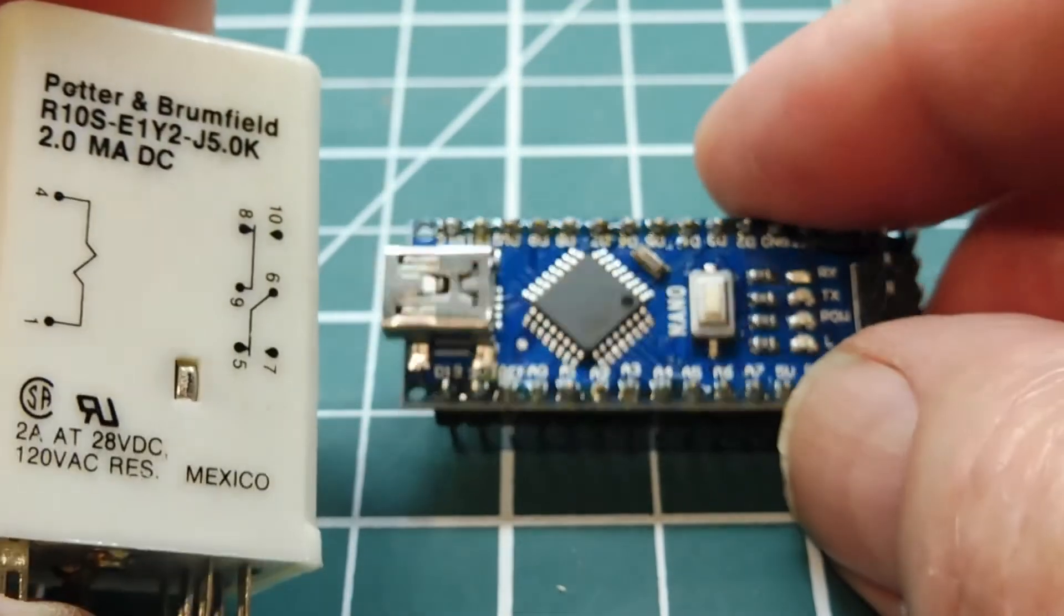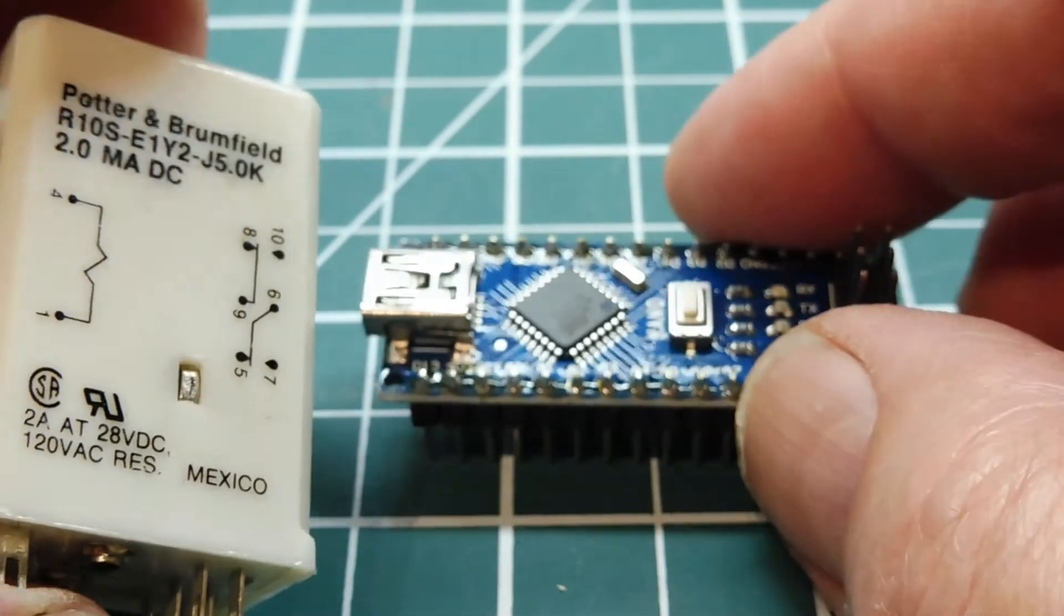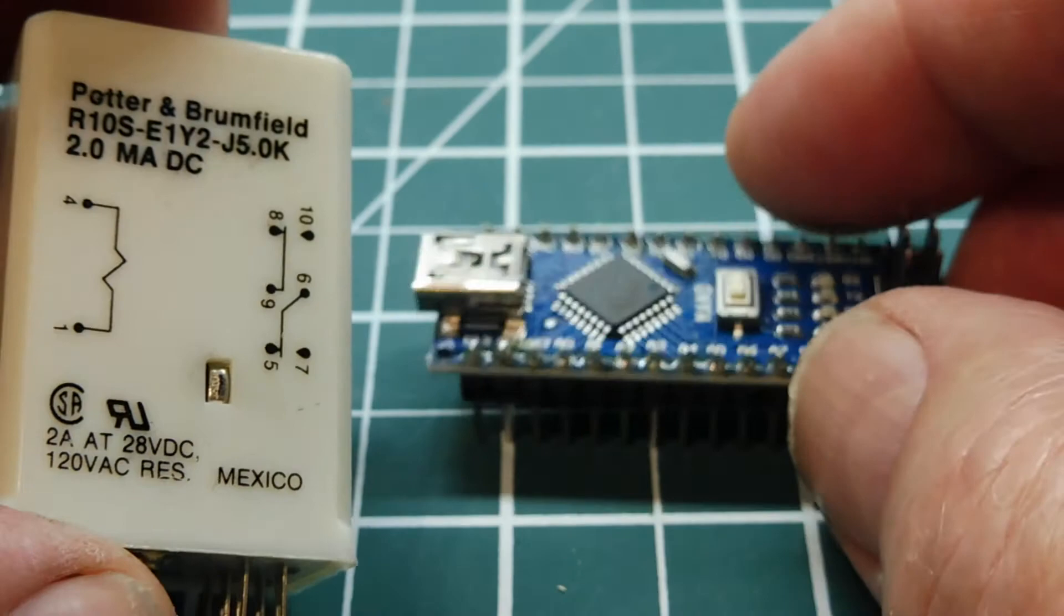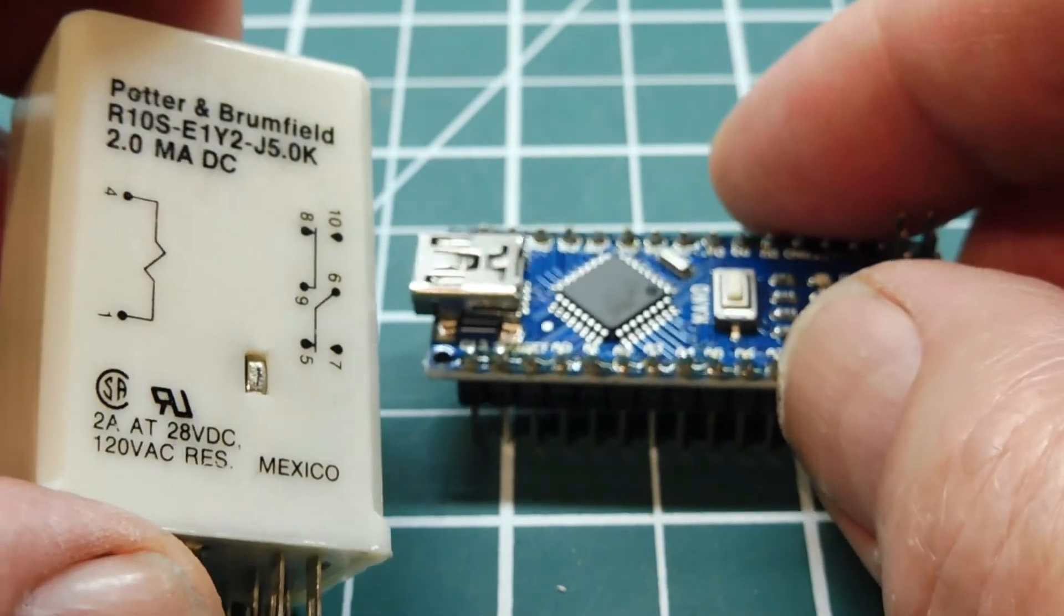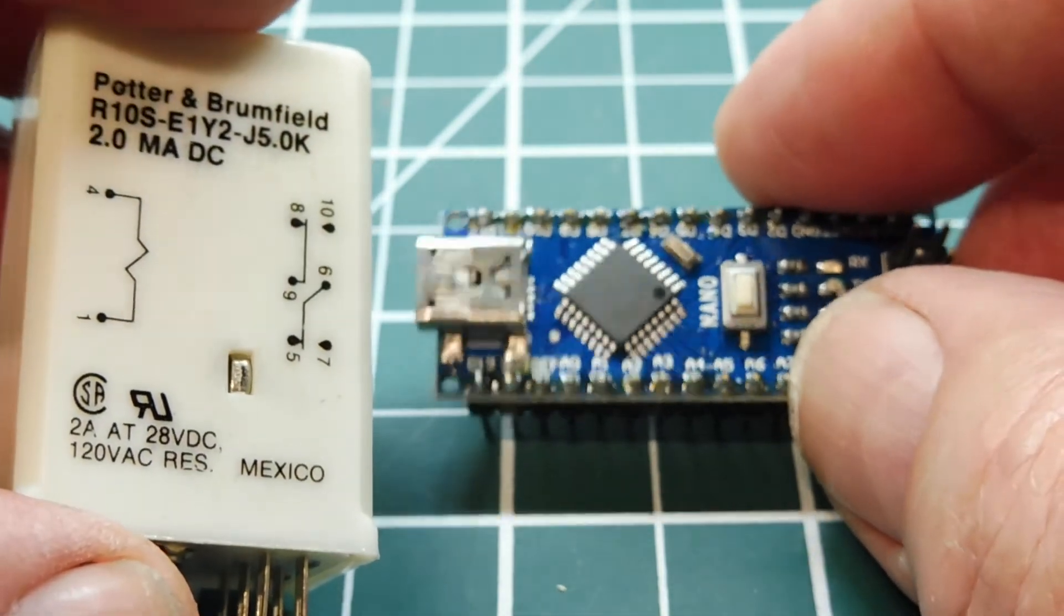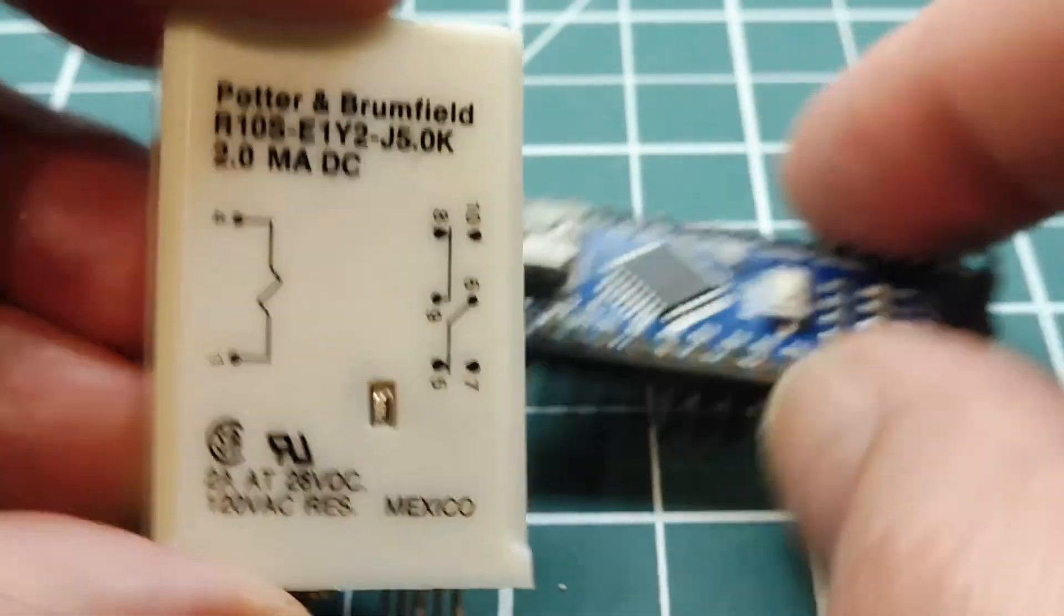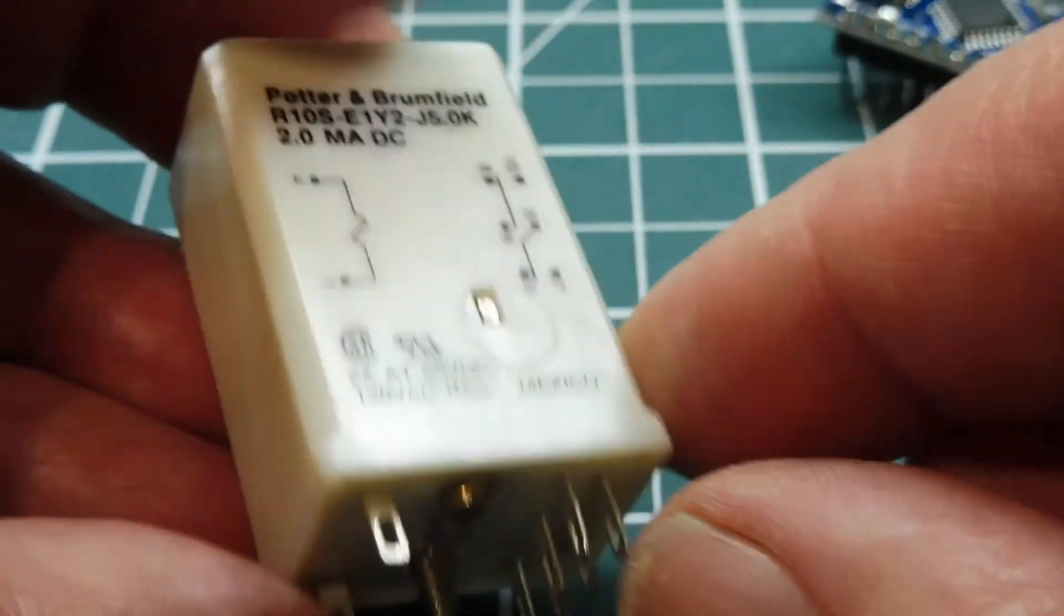So if you have a project where you need to drive some heavy loads and you don't have room for an interface board, you could just wire up the Nano's GPIO directly into this relay and you could drive some heavy loads.